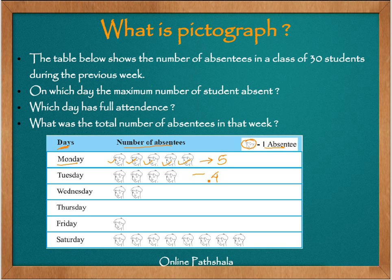Now let's extract information from this table. The table shows the number of absentees in a class of 30 students during the previous week. On which day were the maximum number of students absent? Looking at the table, we can clearly say Saturday had the maximum absentees. Which day had full attendance? Since the picture represents absentees, a day with no picture means full attendance — that was Thursday.